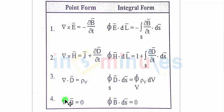These four Maxwell's equations for time-varying fields relate the electric and magnetic fields to each other.